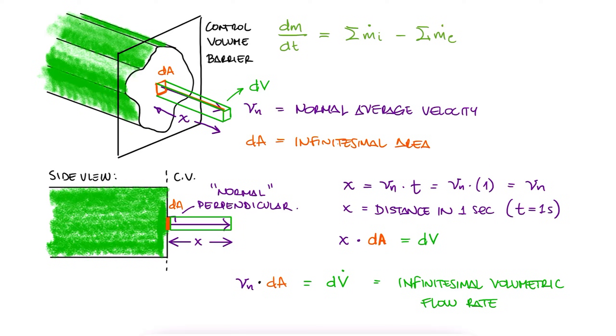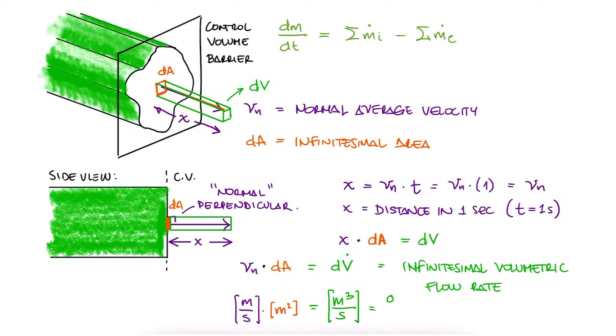Alternatively, you can think of this from a dimensional analysis perspective. Velocity has units of meters per second and area meters squared. Therefore, if we multiply the two, we get cubic meters per second, which is the volumetric flow rate.